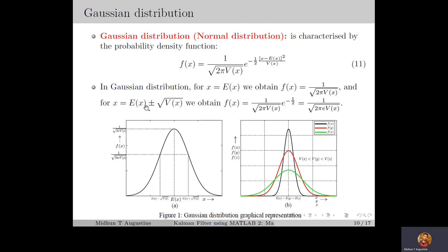Similarly, for x equal to E of x plus or minus root V of x, the exponent term becomes V of x and we get f of x equal to 1 over root 2 pi V of x times e to the minus one half, which is 1 over root 2 pi e times V of x. Here root V of x is the square root of the variance, which we call the standard deviation. So when x equals E of x, the PDF takes the maximum value, and when x changes from E of x by one standard deviation, the PDF reduces by 1 over root e times the peak value.